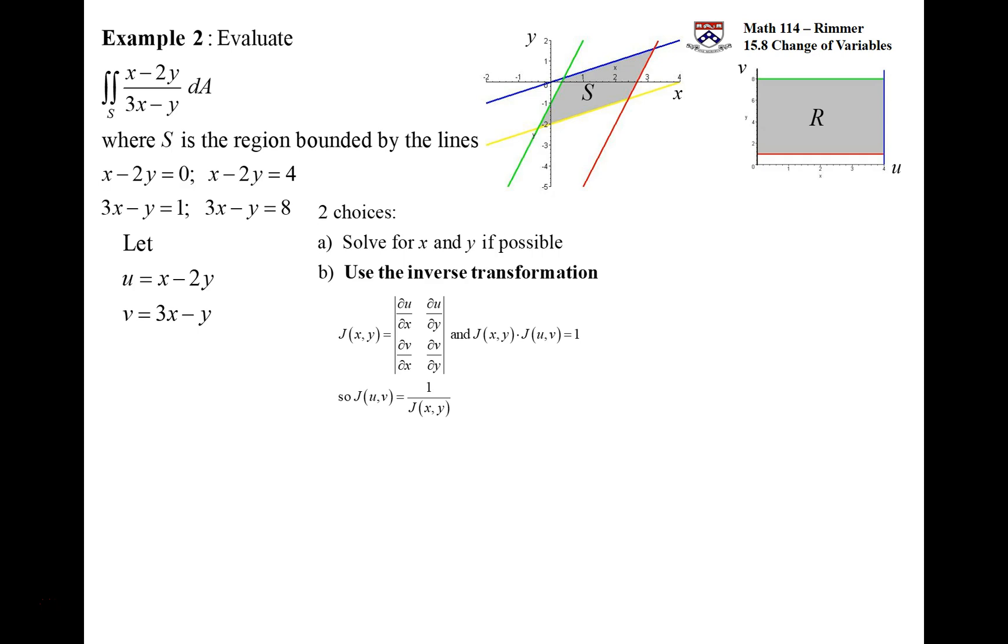What's nice about this one is that the derivatives are rather simple, all constants. The x derivative of u is one, the y derivative of u is negative two, the x derivative of v is three, the y derivative of v is negative one. These go into a matrix and we get the determinant of that matrix: two by two, negative one plus six, we get five. That's the inverse transformation's Jacobian. We simply take the reciprocal to get the Jacobian we need.